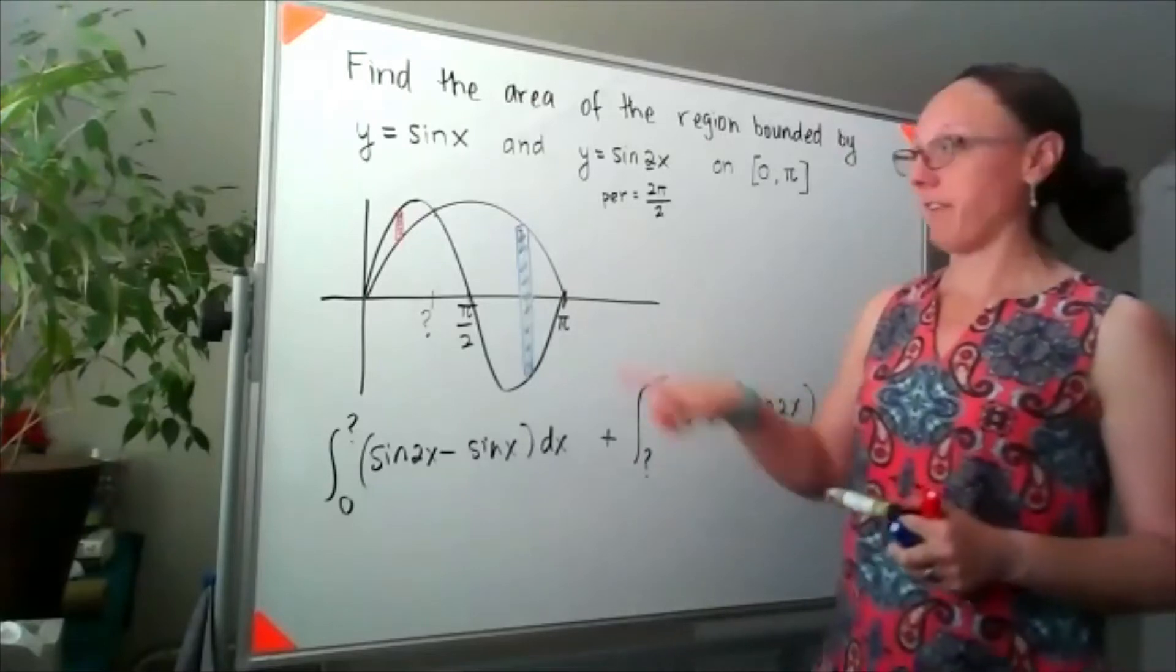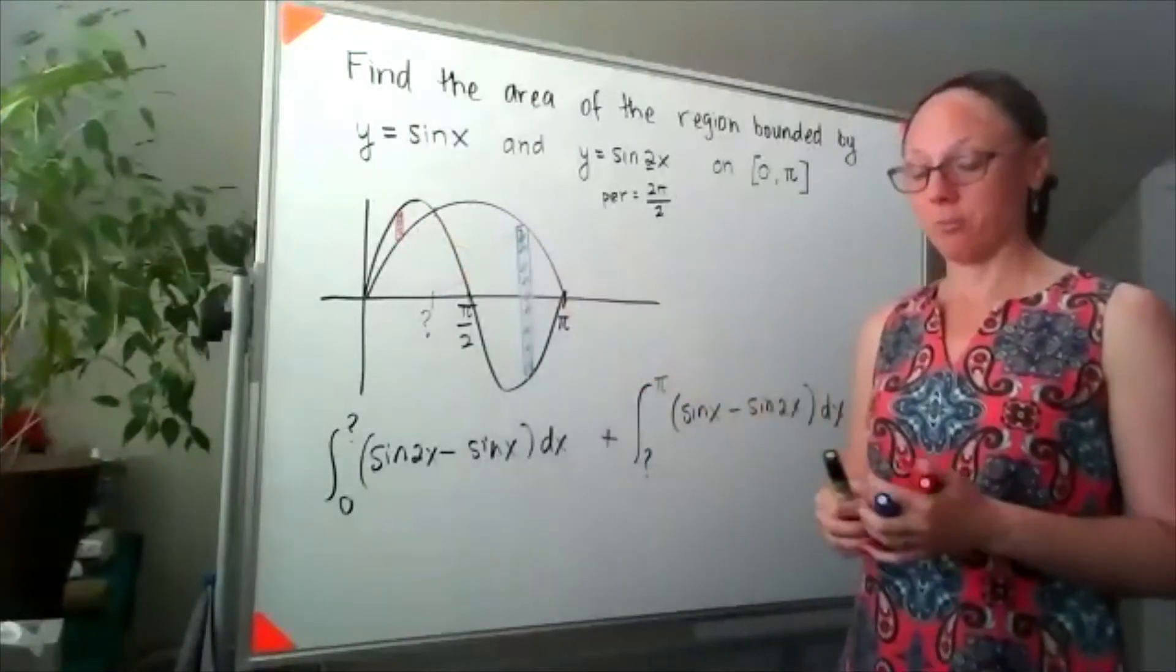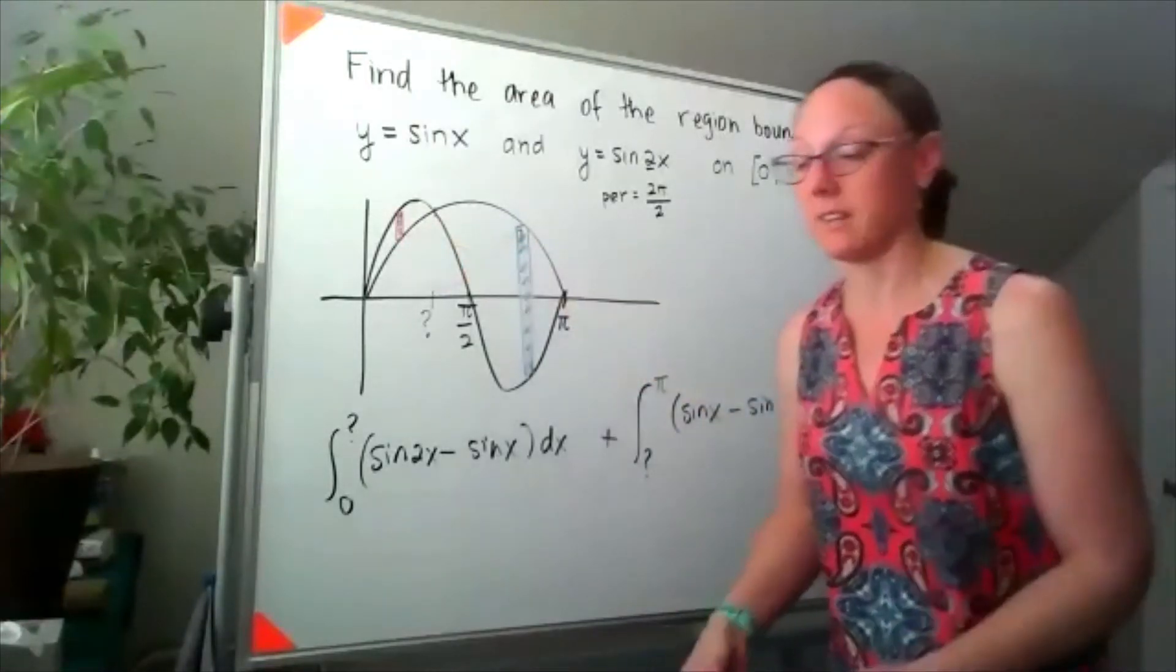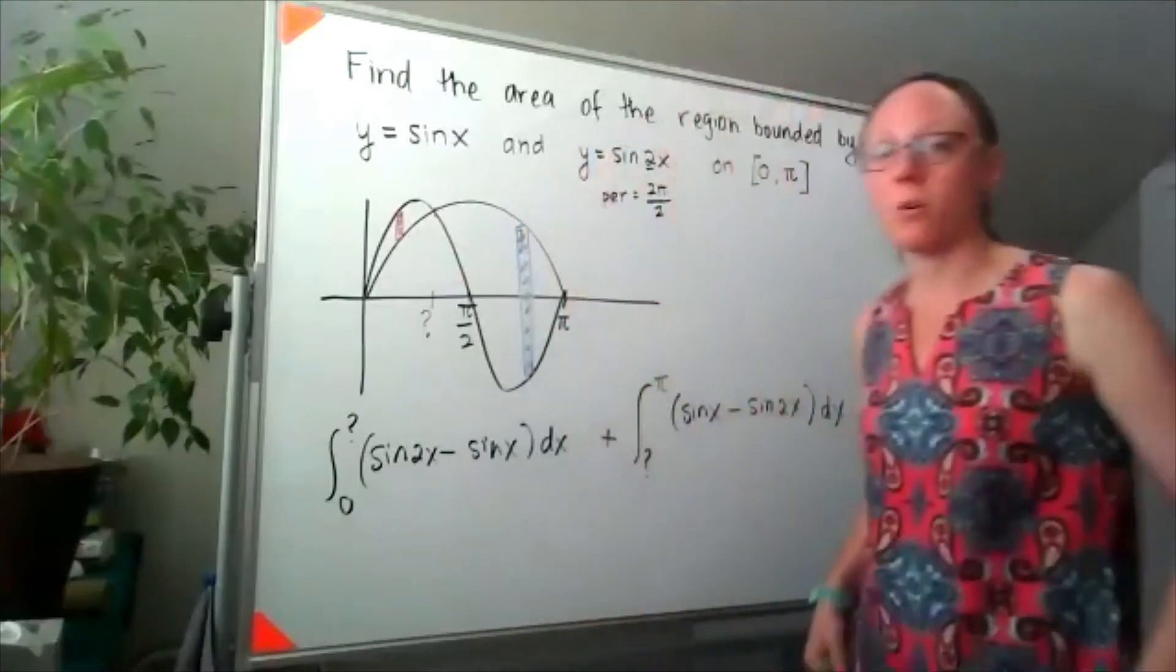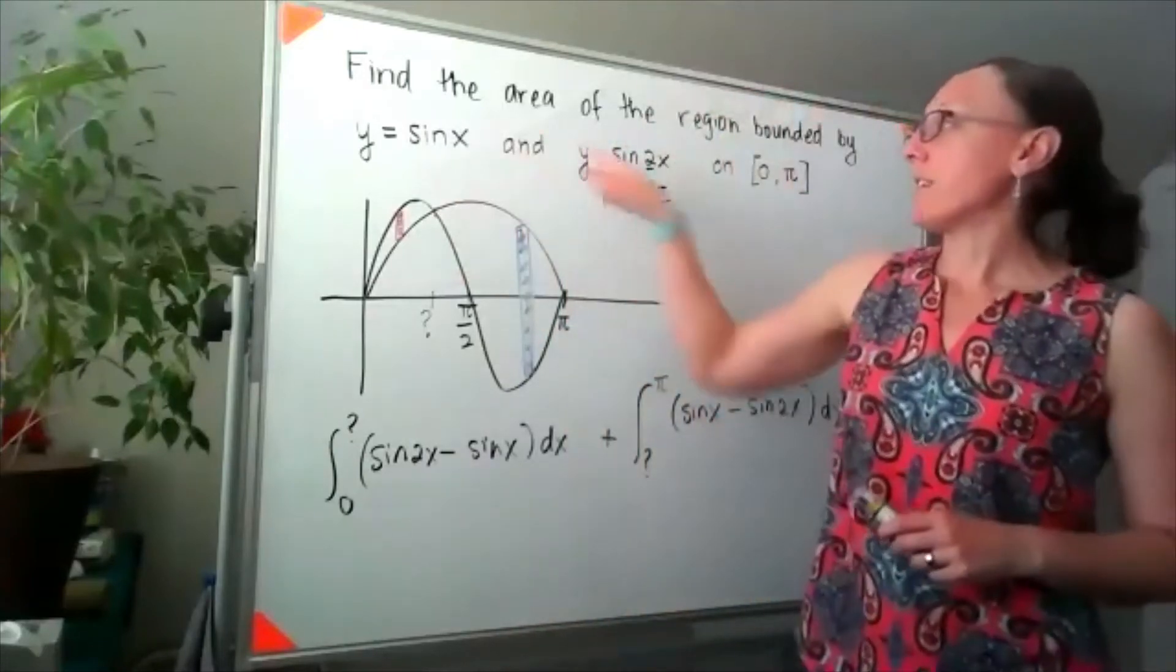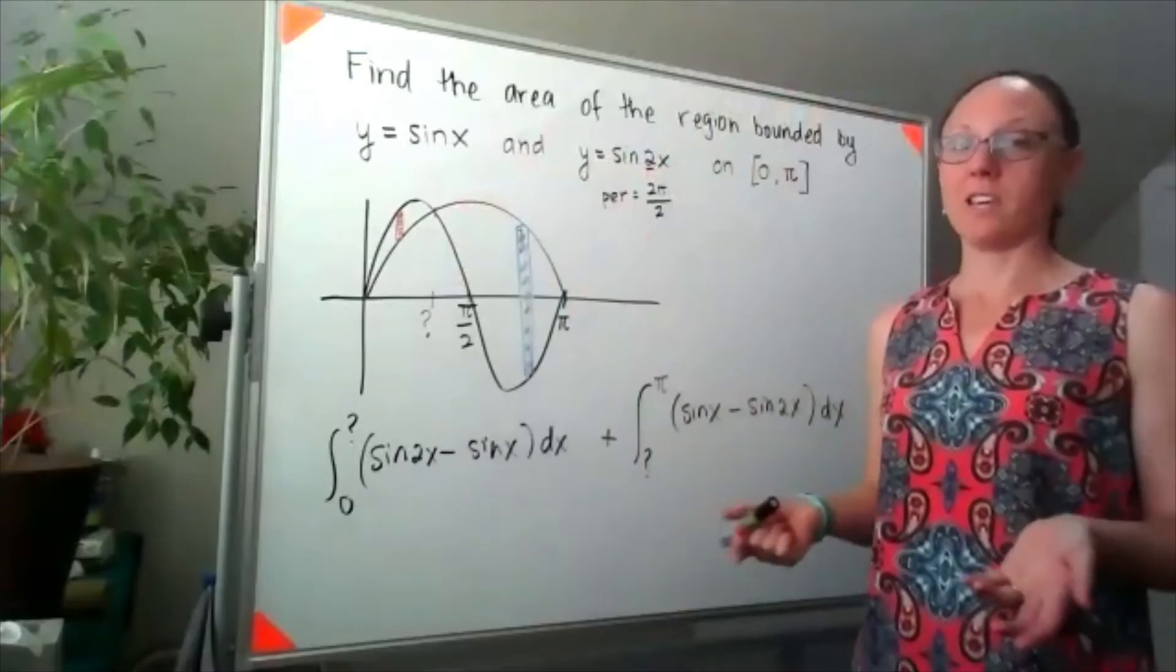Now we need to come back and figure out what is that intersection point. I'm going to use the same technique that we used on the previous example, which is to set the two y values equal to each other.